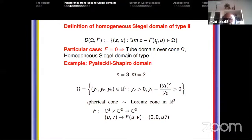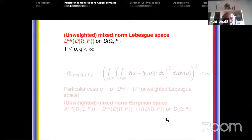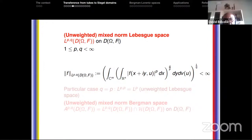Let me give the example of Pyatetski-Shapiro. The cone is the spherical cone, which is linearly isomorphic to the Lorentz cone. Pyatetski-Shapiro took as the Ω-Hermitian form F(U, V) = (0, 0, U·V̄), and proved that this domain is homogeneous but not symmetric.